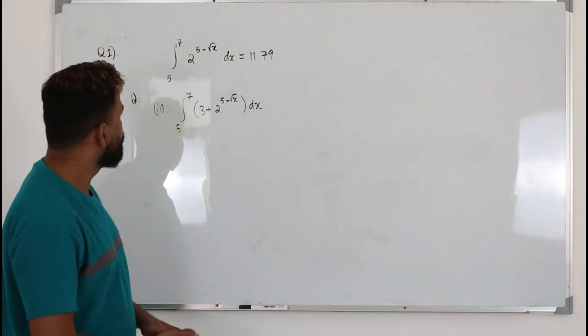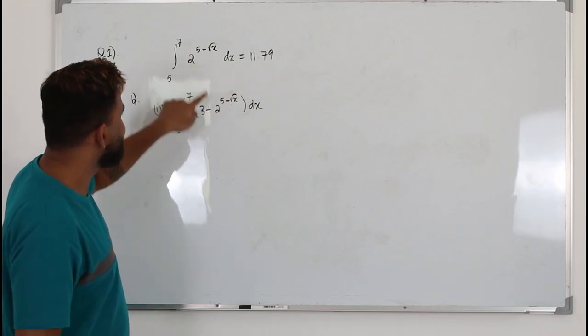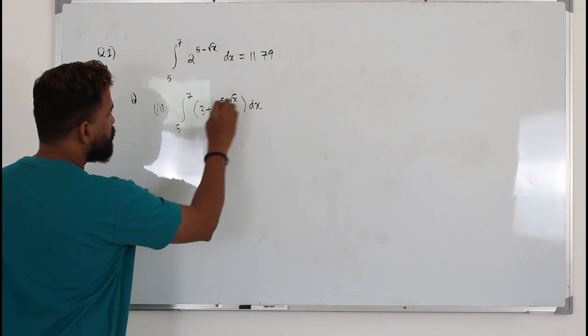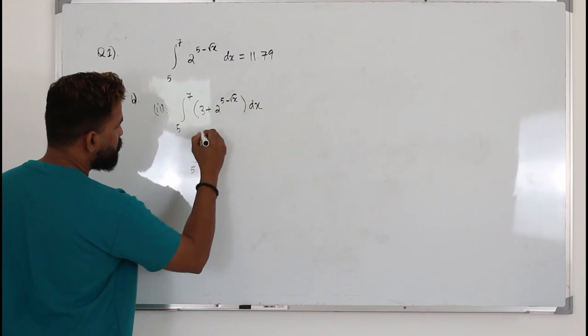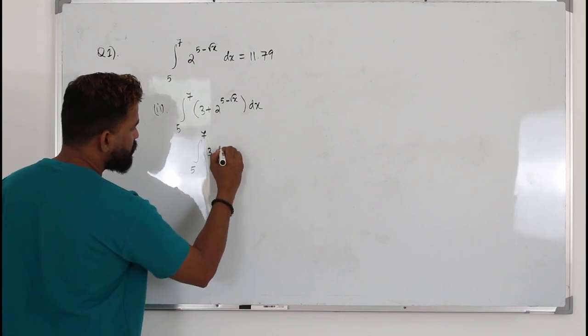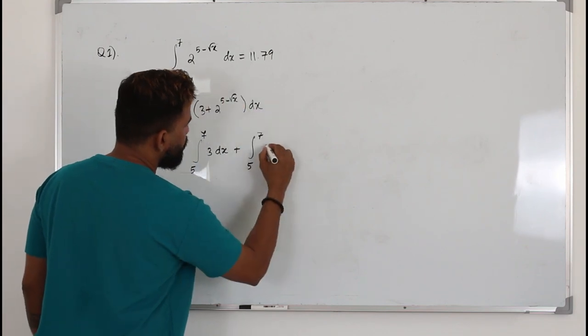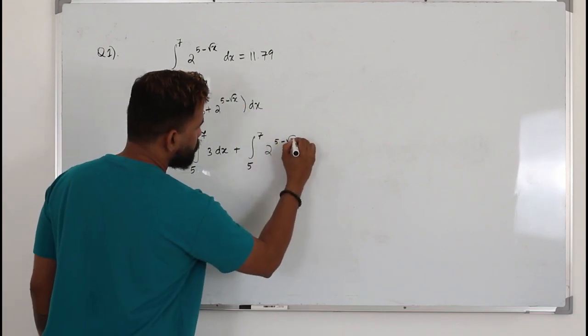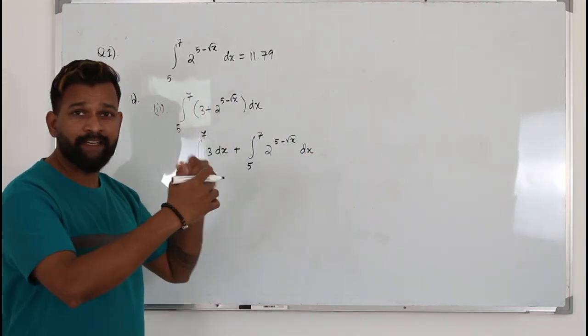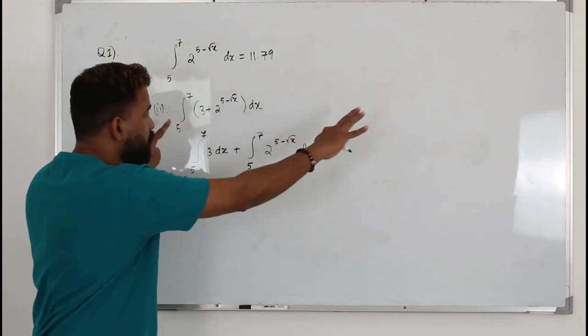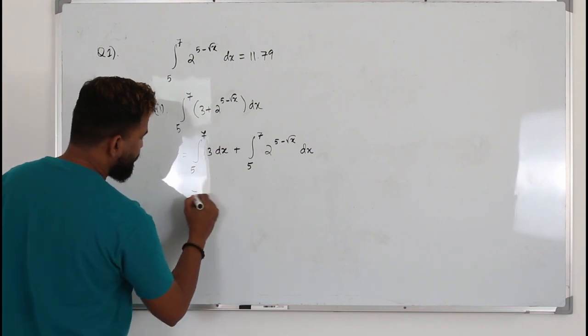Now look at double i. Again another question. But if you look at the function, the function is slightly different. You have some extra 3 here. So I am going to split this into 2 integrals. The first one is integral 5 to 7, 3 dx, plus integral 5 to 7, this function dx. You are allowed to do that in integration. When you have two functions connected by the arithmetic symbol plus or minus, you can split them into 2 integrals.